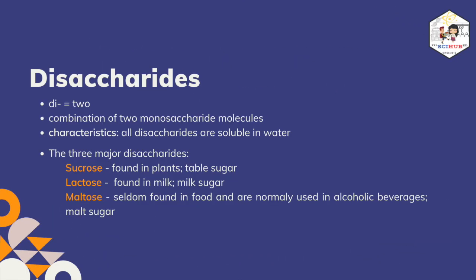When two monosaccharides are combined or bonded together, they form the second type of carbohydrates we call disaccharides. Disaccharides, denoted by the prefix di- meaning two, are two monosaccharides linked by a glycosidic bond. All disaccharides are water-soluble and are sweet when dissolved. Disaccharides, unlike monosaccharides, are not easily used up by our cells. Due to their larger structure, they need to be broken down into their basic monosaccharide components. There are three major types of disaccharides: sucrose, lactose, and maltose.